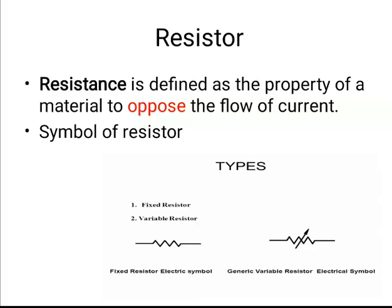There is a difference between resistor and resistance: a resistor is a component, and resistance is the property provided by the resistor. Resistance is defined as the property of a material to oppose the flow of current. If a material has high resistance, it opposes more current; if it has low resistance, it opposes less. All metals have low resistance because they are good conductors, while insulators like plastic and fiberglass have high resistance because they oppose current flow.